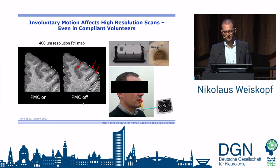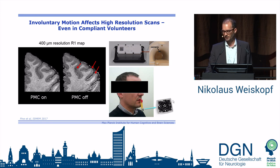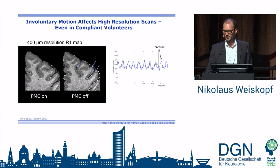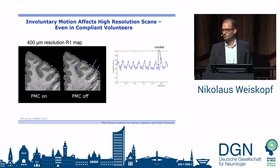One important step is artefact reduction, particularly motion artefacts. This image was acquired with a special optical motion tracking system that prospectively corrects for motion during the scan; compare this to the original image without it, and you can see how much crisper it becomes. It requires just a small marker attached to the subject's head, a camera, and the scanner. The system can even track respiration and cardiac pulsation — head motion from cardiac pulsation is in the range of 200 micrometres, very close to our voxel size. We need to deal with motion: it's crucial.